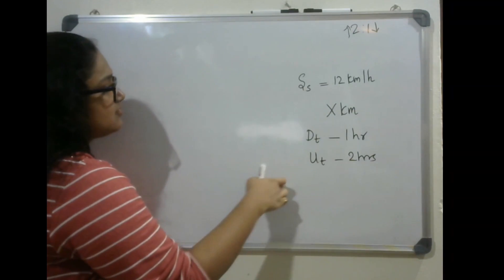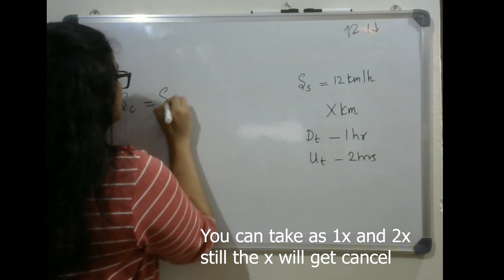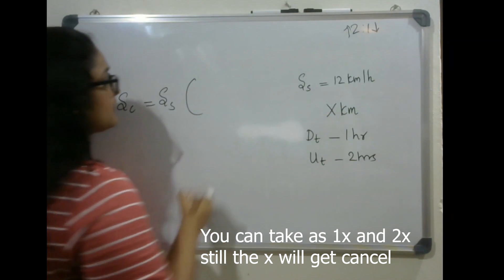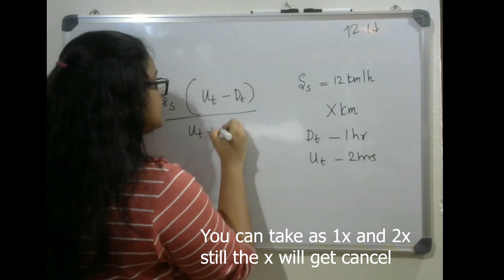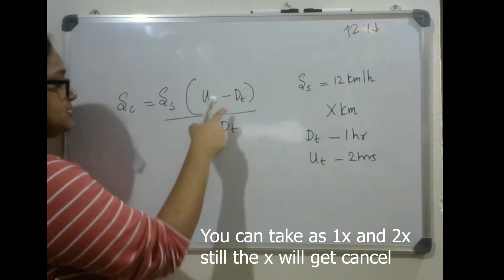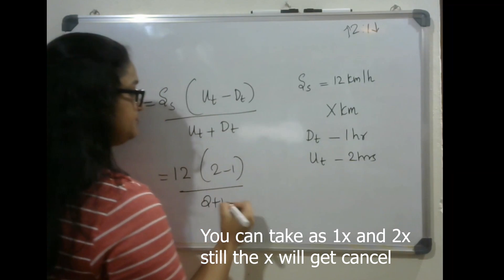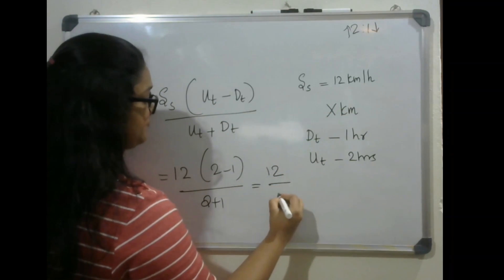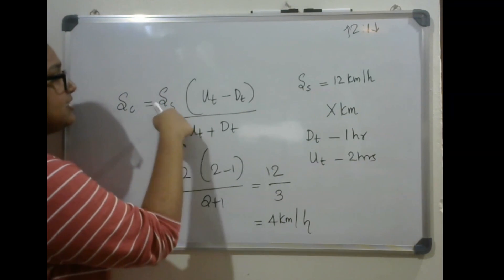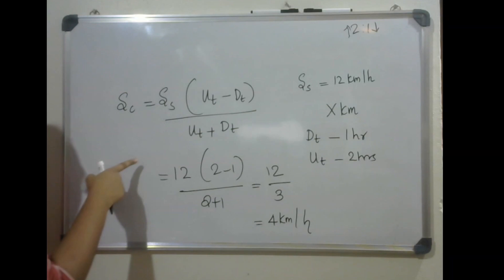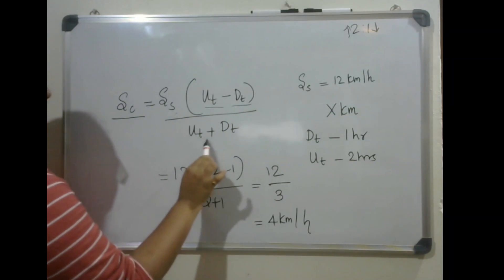With these conditions we have a formula to find the speed of the current, which equals speed in still water multiplied by upstream time minus downstream time divided by upstream time plus downstream time. So that equals 12 into 2 minus 1 by 2 plus 1, which equals 12 by 3, that equals 4 kilometers per hour. When the speed in still water and the time taken to travel the same distance is given, the speed of current equals speed in still water into upstream time minus downstream time divided by upstream time plus downstream time.